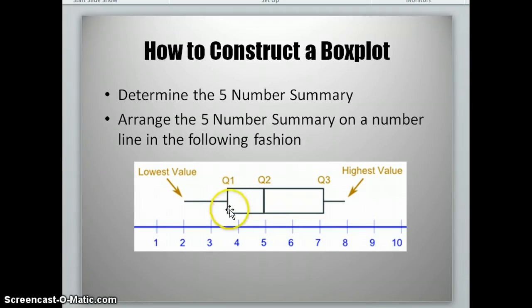The box is created by connecting the three quartiles with Q1 as the left-hand side, Q3 as the right-hand side, and Q2 falls somewhere within that box. The lowest and highest values are used to create what's called the whiskers of the box plot. Those are just horizontal lines drawn out from the box to the lowest value and to the highest value.